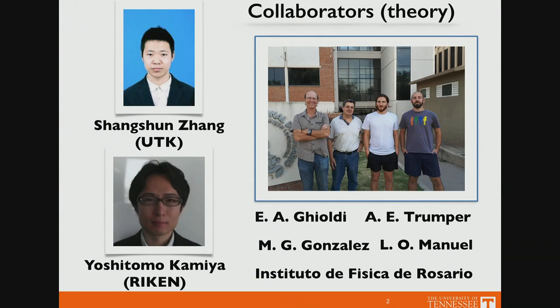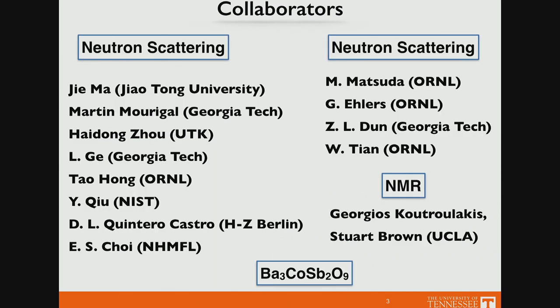This is work that we did in collaboration with Shan Junshan, a postdoc at the University of Tennessee; Yoshitomo Kamiya, who is at RIKEN right now but moving soon to Jiao Tong University in Shanghai as an assistant professor; and my friends and collaborators from the Instituto de Fisica de Rosario: Esteban Joldy, Adolfo Trumper, Matias Gonzalez, and Luis Manuel. There is also a long list of experimentalists who collaborated at different stages and provided the inspiration for what I will describe in the second part of the talk.